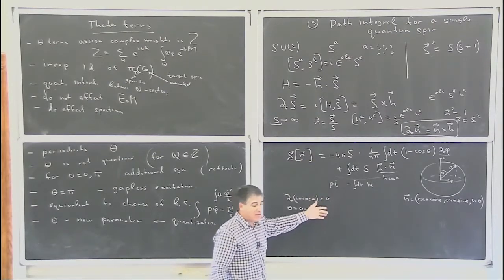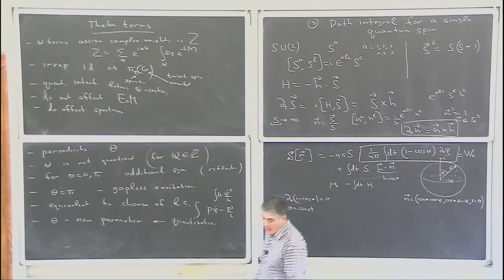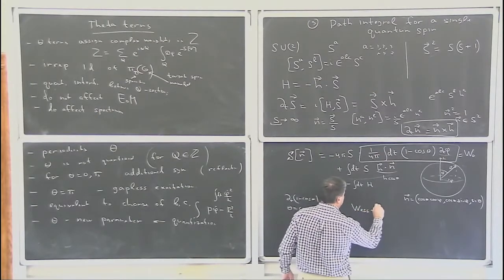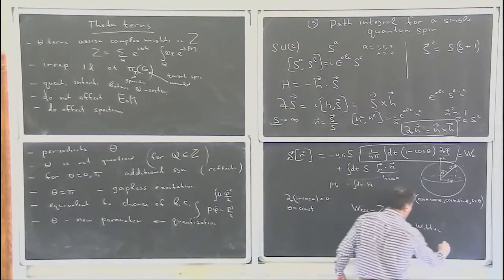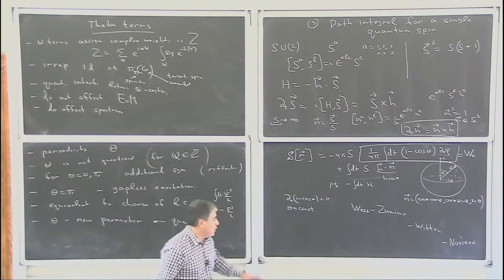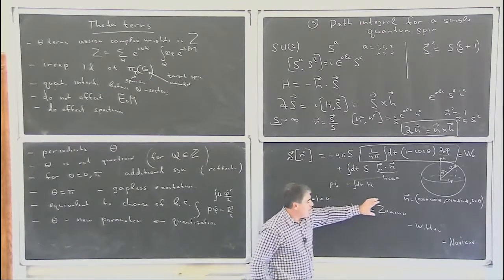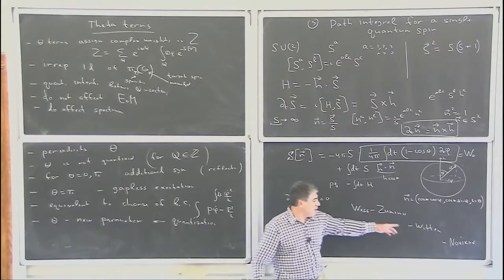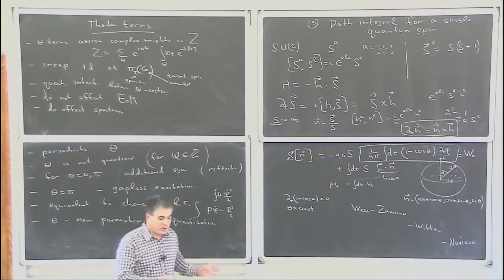This object — the first term — I will call W_0, and it is very important. It is the analog of the Wess-Zumino term, also known as the Wess-Zumino-Witten term or Wess-Zumino-Witten-Novikov term. Wess and Zumino introduced this term for 3+1 dimensional systems to describe current algebras. Witten clarified the geometric and topological aspects and considered it extensively in 1+1 dimensions. Novikov considered this as a multi-valued functional in mathematics — as a topologist, not related to physics at that point.